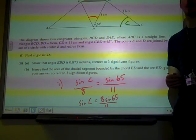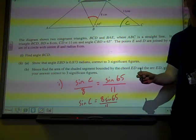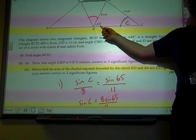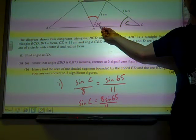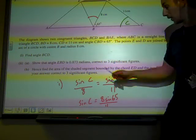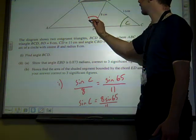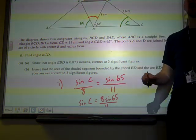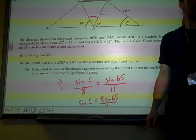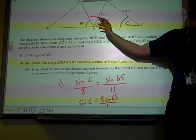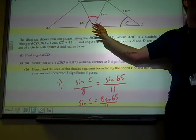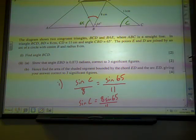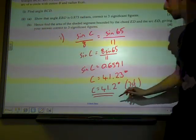Show that angle EBD is 0.873 radians, correct to three significant figures. Well, this is just about converting degrees to radians. To start with, I think we can work it out in degrees. If that's 65, and we've been told that these are two congruent triangles, then that is 65 degrees as well. And if those two are 65 degrees, they add up to 130. So that angle there must be 50 degrees. Because this is a straight line. So angle EBD is 50 degrees.